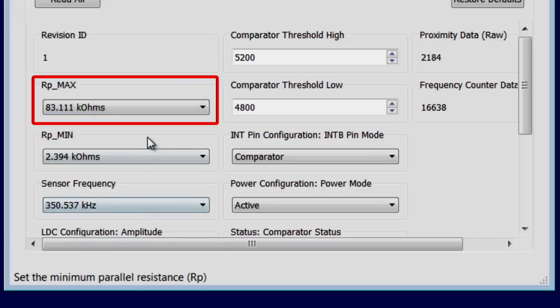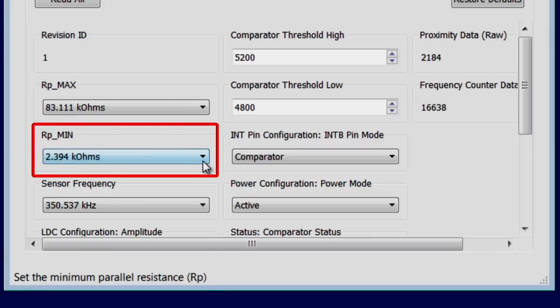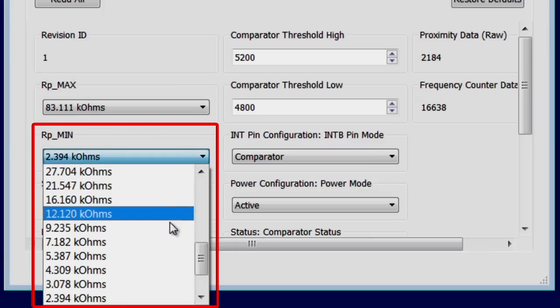The next step is change Rp min. Rp min has to be set to half the minimum value that was measured. We had measured 20 kilo ohms on the impedance analyzer. I go to the GUI and select half of it, which is 9.235 kilo ohms.